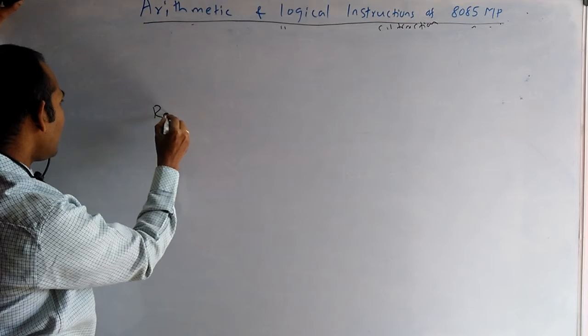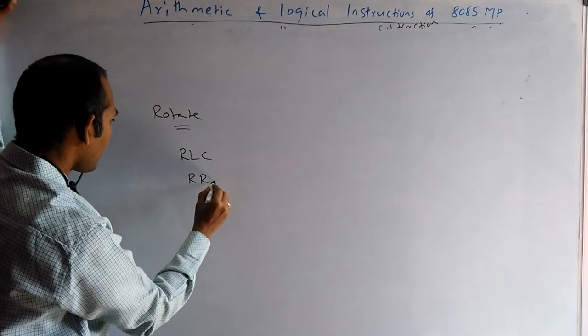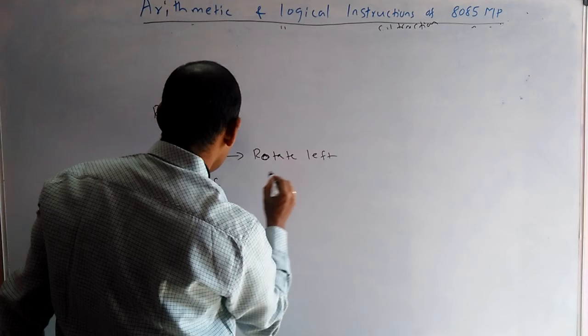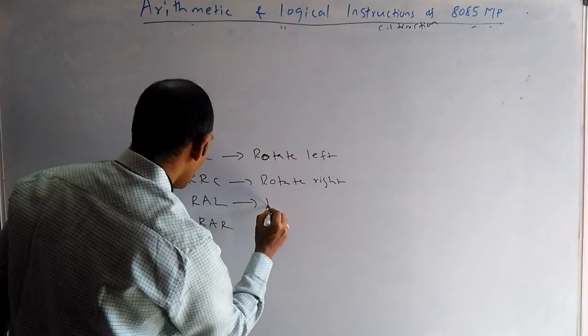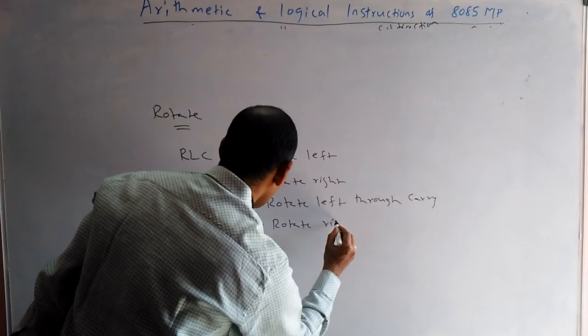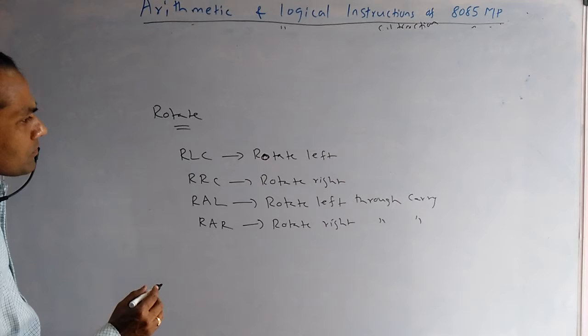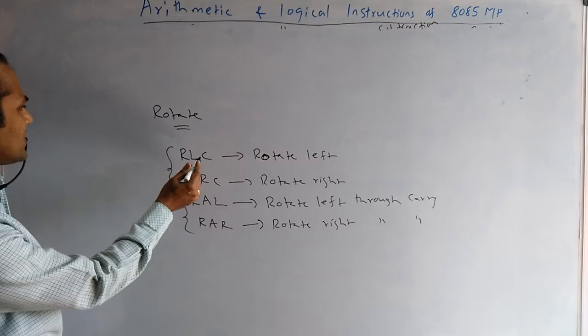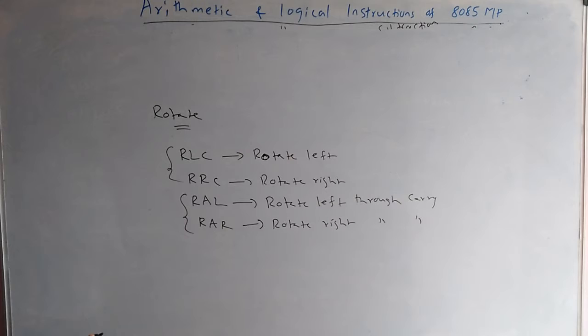In the 8085, there are four rotation instructions: RLC, RRC, RAL, and RAR. RLC is rotate left, RRC is rotate right, RAL is rotate left through carry, and RAR is rotate right through carry. In RAL and RAR, carry is involved in the rotation. One confusing point: if 'C' is in the instruction name, carry is not involved; if 'C' is not there, carry is involved — exact opposite nature.